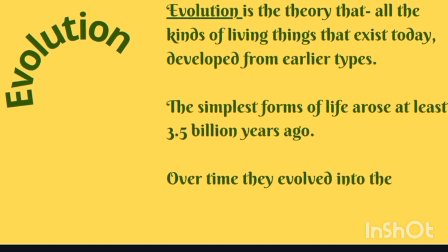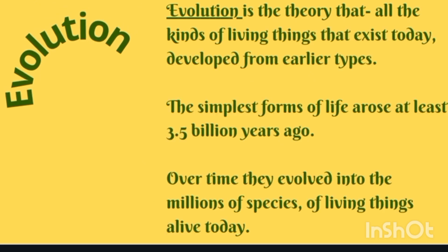Let's understand what is evolution. There is a theory that says that all the different kinds of living things — plants and animals which are existing today — are developed from earlier types. The simplest form of life arose at least 3.5 billion years ago. Over time, they evolved into millions of other species and all the living things that are alive today. Basically, evolution means a gradual and continuous change — a change that is slow but continuous.